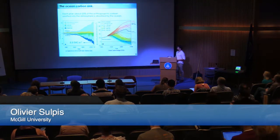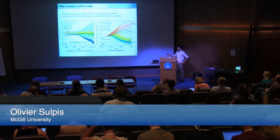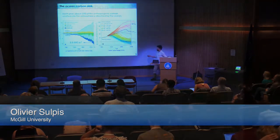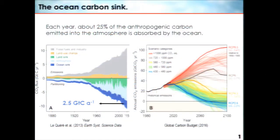These days, each year we are emitting about 10 gigatons of carbon into the atmosphere, and about 25% of that ends up in the ocean. According to the business-as-usual scenario, the RCP 8.5 scenario, it should continue during the next century as we are here following it pretty closely.